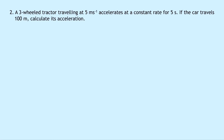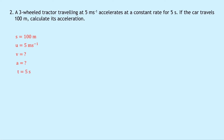Question two says that a three-wheeled tractor traveling at 5 meters per second accelerates at a constant rate for 5 seconds. If the car travels 100 meters, calculate its acceleration. So we're looking for A in this question. Writing down SUVAT on the left hand side: we know S equals 100 meters, U is 5 meters per second, we don't know V, we're trying to find A, and the time is 5 seconds. So I'm going to put a star next to A.